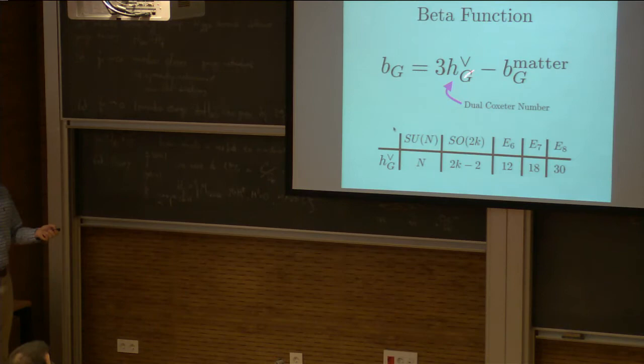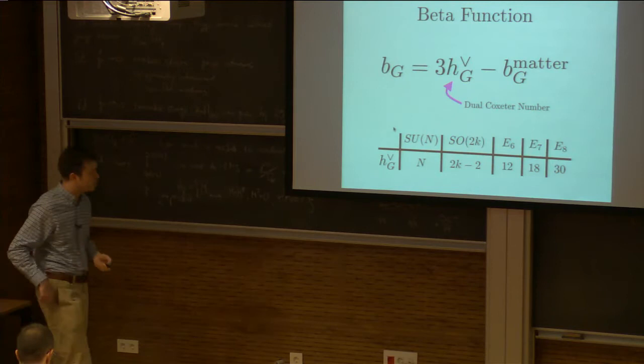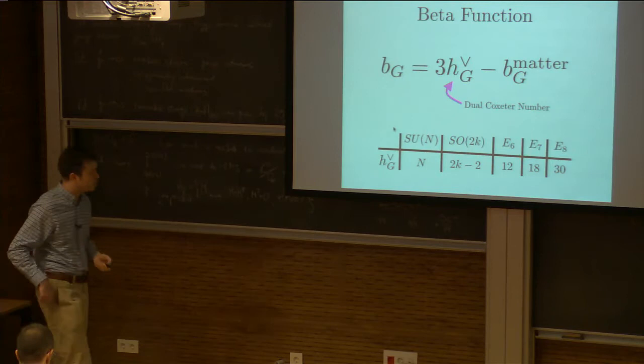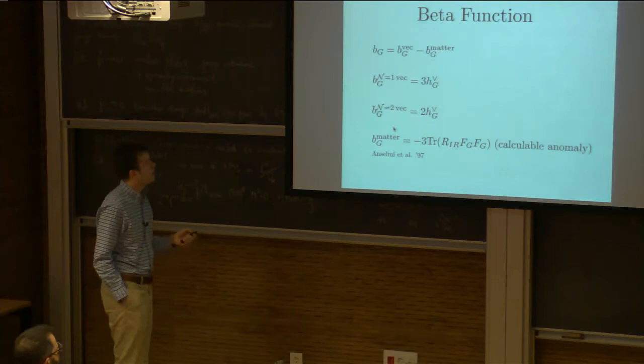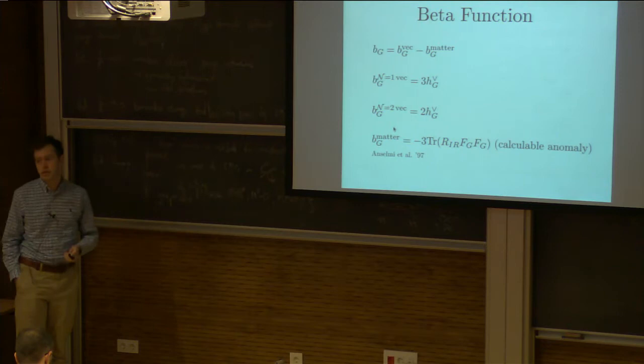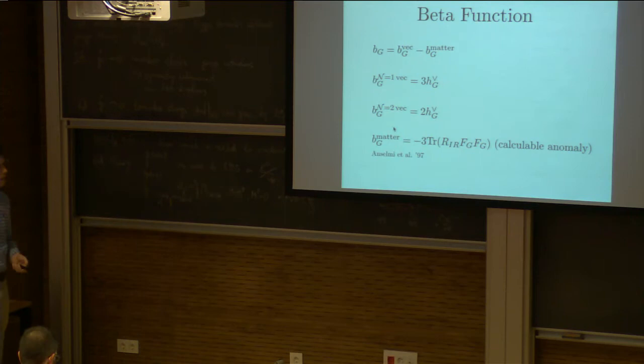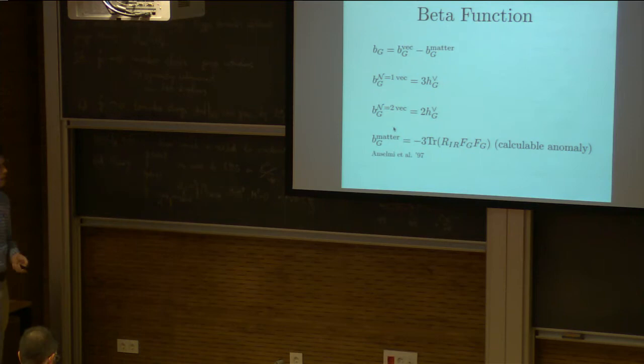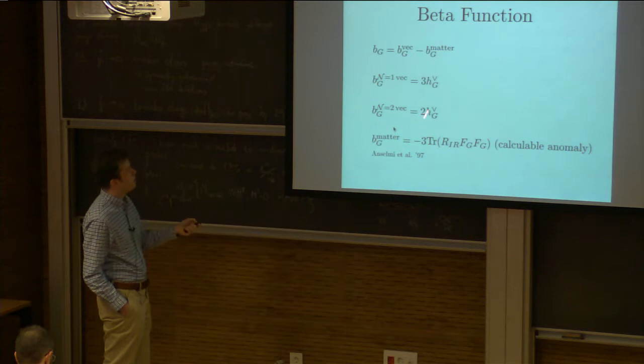The name of the game is to compute what happens to our gauge theory when we've weakly gauged the symmetry — does it flow to an interesting theory, make a CFT, gap in the infrared? Can I calculate the matter contribution? Indeed, at weak coupling I can, because this is controlled by an anomaly — a triangle diagram involving the infrared R-symmetry and two flavor currents. After I switch on the gauge coupling it could flow to something strong, but initially in the ultraviolet where things are all weak, I can read off the beta function coefficient from matter this way.